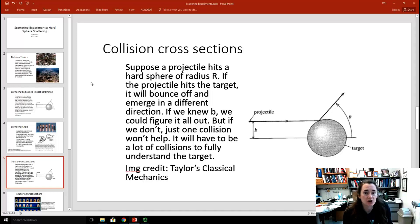Suppose a projectile hits a hard sphere of radius R. If the projectile hits the target, it's going to bounce off and then emerge in a different direction. If you knew the impact parameter B, you can figure it all out. But if you don't, just one collision won't really help. You're going to have to have a lot of collisions to fully understand the target. In other words, you can visualize like taking a pie or something, like a food fight, and throwing it at some target. Let's say that for some reason you're blindfolded and you can't really see the target. And then after the experiment is over, they move the target away. It would be like trying to figure out what the target looked like by looking at the food splatter on the wall. So that's basically what we're trying to do here.